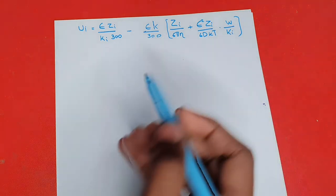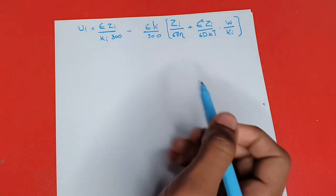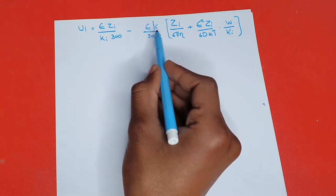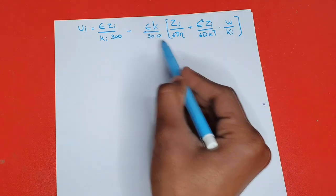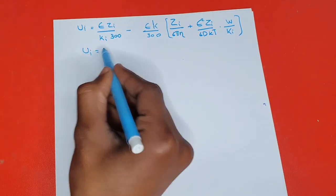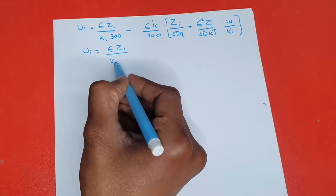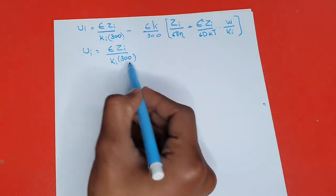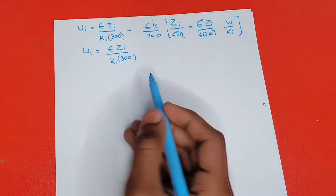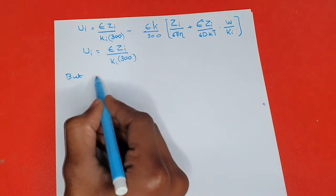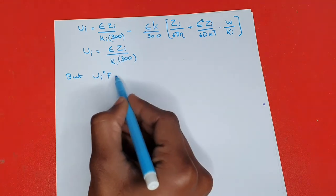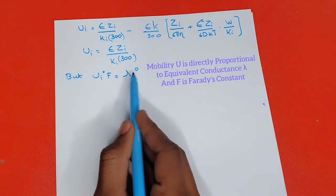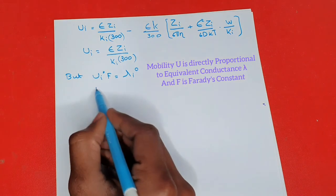At infinite dilution, the value of k becomes equal to zero. So at infinite dilution that part goes to zero and we are left with only u_i = e·z_i / (k_i · 300). Since u_i⁰ · f = λ_i⁰, I can find the value for u_i⁰.